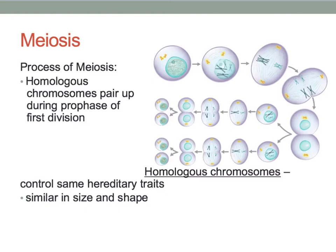Homologous chromosomes pair up during prophase of the first division. Homologous chromosomes are chromosomes that control the same heredity traits. They are similar in size and shape.